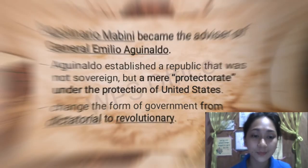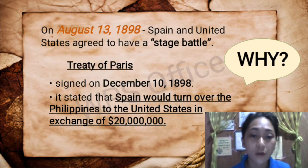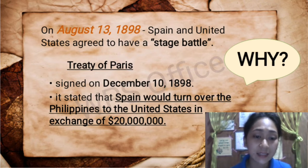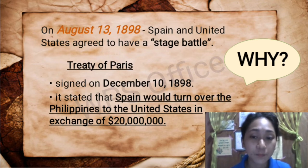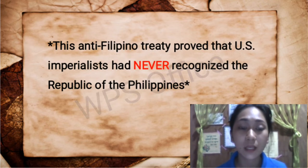On August 13, 1898, Spain and the United States agreed to have a staged battle, after which they agreed to sign the Treaty of Paris. The Treaty of Paris, signed on December 10, 1898, was an agreement between the United States and Spain that Spain would turn over the Philippines to the United States in exchange for $20 million. This anti-Filipino treaty proved that U.S. imperialists had never recognized the Republic of the Philippines.